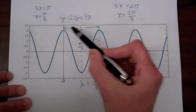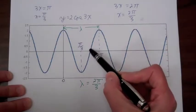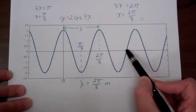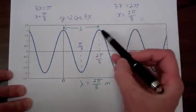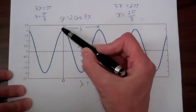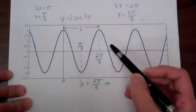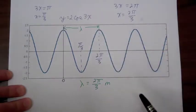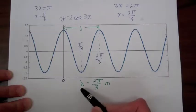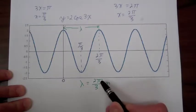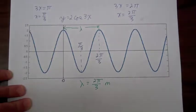The distance at which a wave repeats itself is called the wavelength. For instance, from crest to crest here is a wavelength, and so for this particular wave, the wavelength is 2π/3 meters.